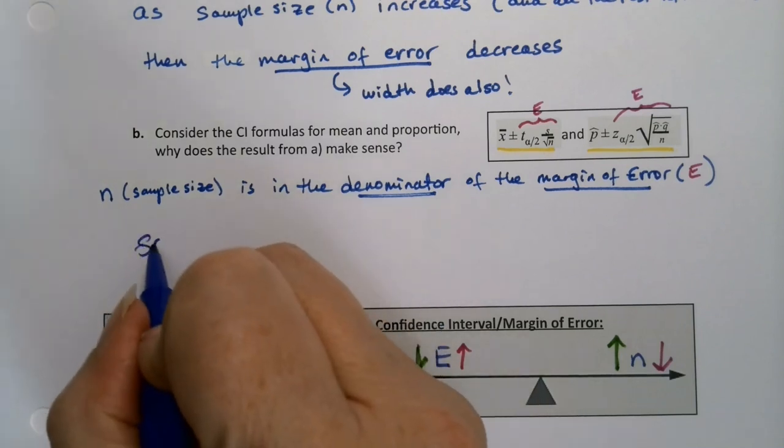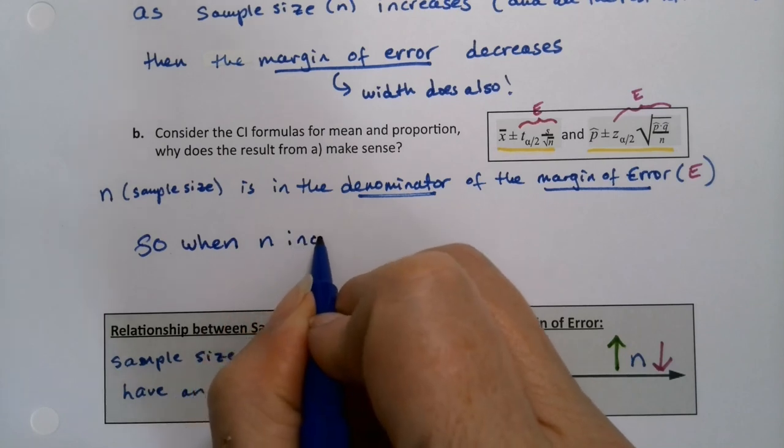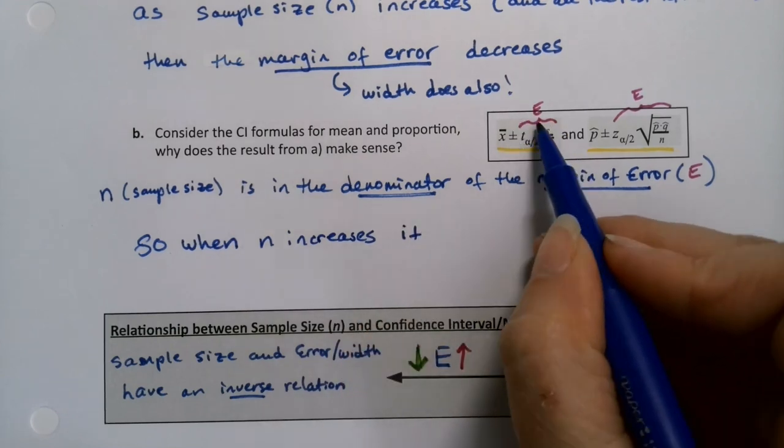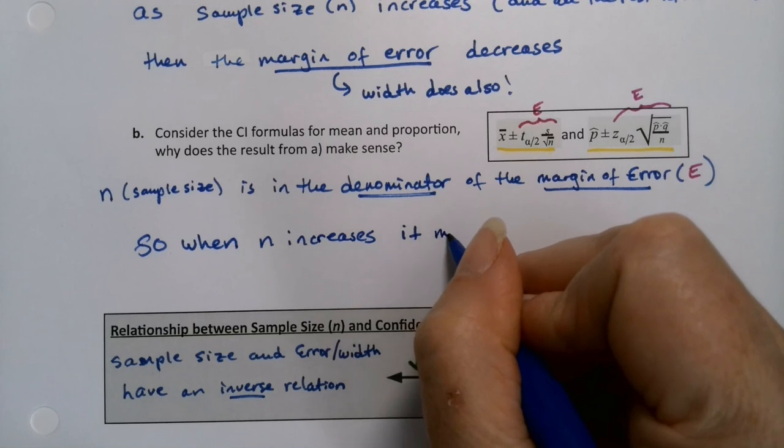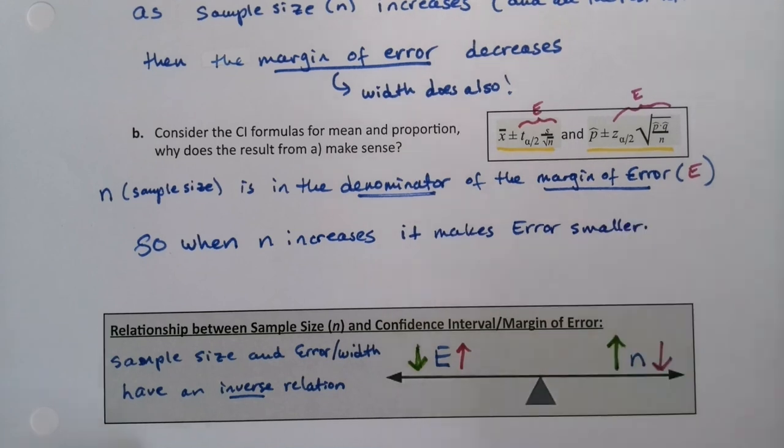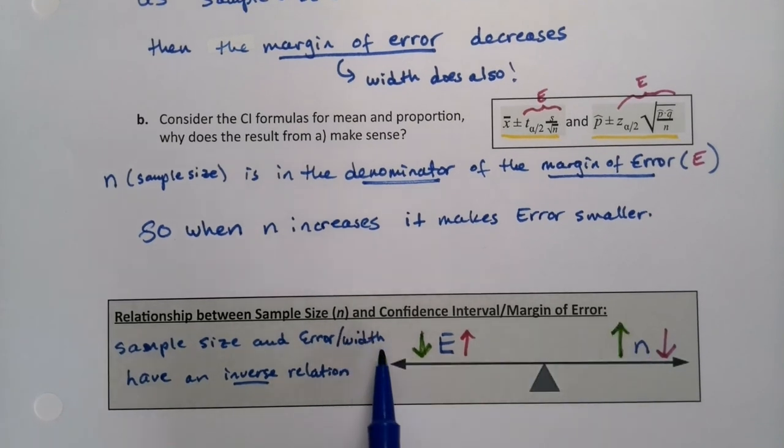And since, so when N increases it makes the fraction, the overall fraction smaller. The overall error smaller. And vice versa, if you shrunk the sample size, then it would make the overall error larger. Which is what we're putting down here on the teeter totter. When N goes up, error goes down. When N goes down, error goes up. Vice and vice versa, right? They have an inverse relationship.